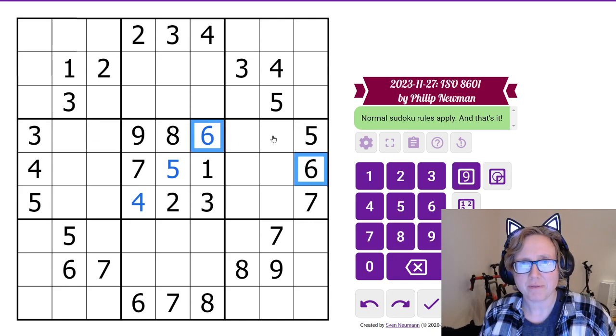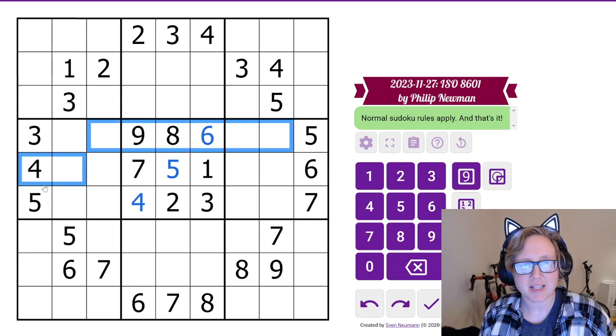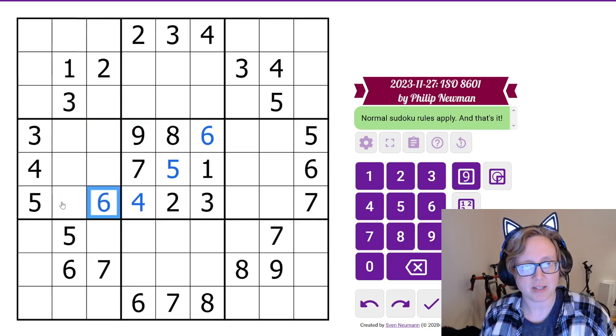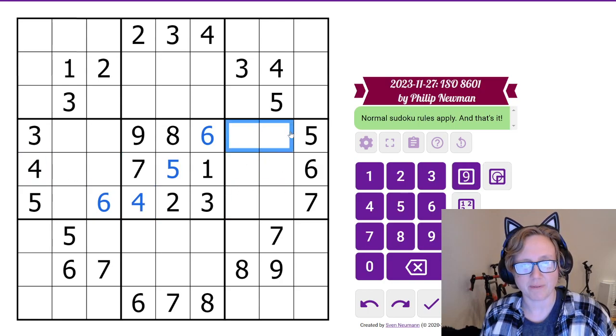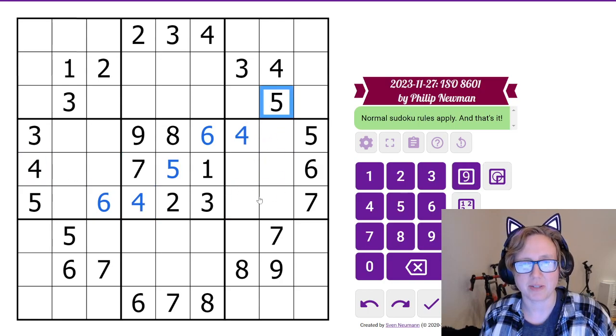That means I now have two 6s in this middle band, so I need a 6 in one of these cells, and it has to go there. And I also have two 4s here, so I need a 4 in one of these cells, so it has to go there.